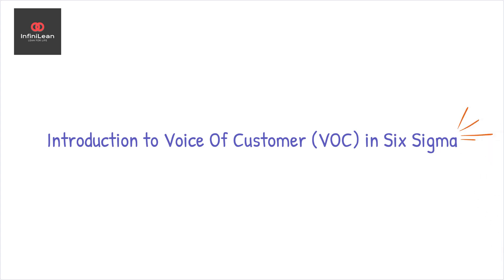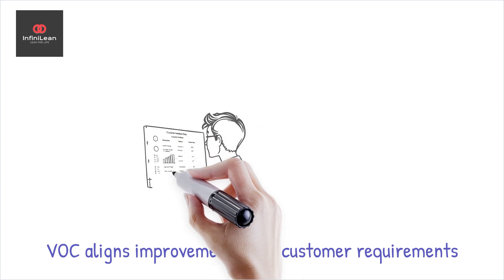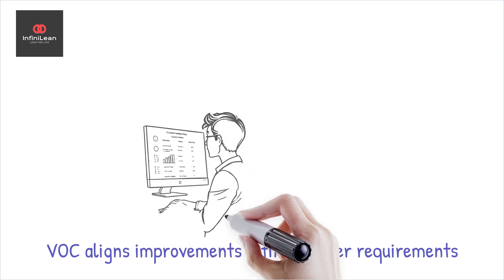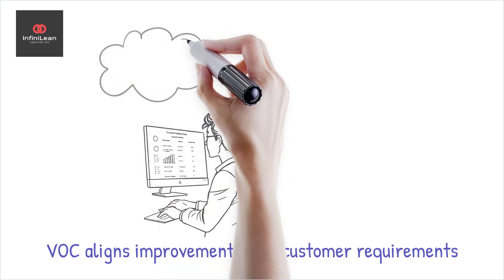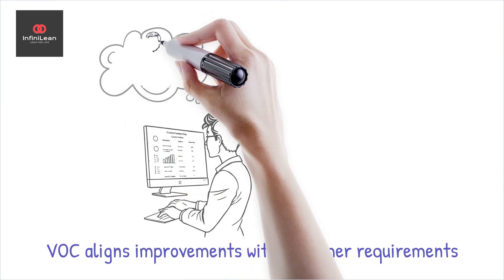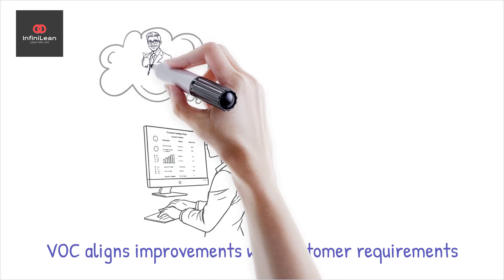Understanding VOC is crucial in Six Sigma methodologies, as it emphasizes what truly matters to customers. Imagine striving for excellence only to realize you excel in the wrong areas. That's where VOC ensures you align your improvements with customer requirements, leading to greater satisfaction and improved product or service quality.